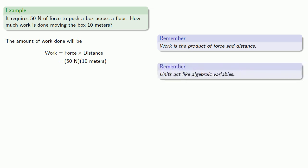And remember, units act like algebraic variables, so when we multiply these two together, we can multiply the coefficients 50 and 10 to get 500, and the units multiply to get Newton meters. And note that since we're measuring force in Newton and distance in meters, this Newton meter is the same as a Joule.